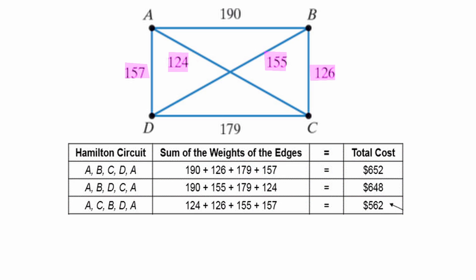We have the ACDBA option, which is 124, 179, 155, and 190 for a total of $648.